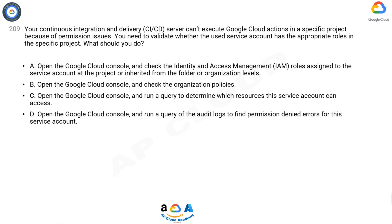A: Open the Google Cloud Console and check the Identity and Access Management (IAM) roles assigned to the service account at the project, or inherited from the folder or organization levels. B: Open the Google Cloud Console and check the organization policies. C: Open the Google Cloud Console and run a query to determine which resources this service account can access.